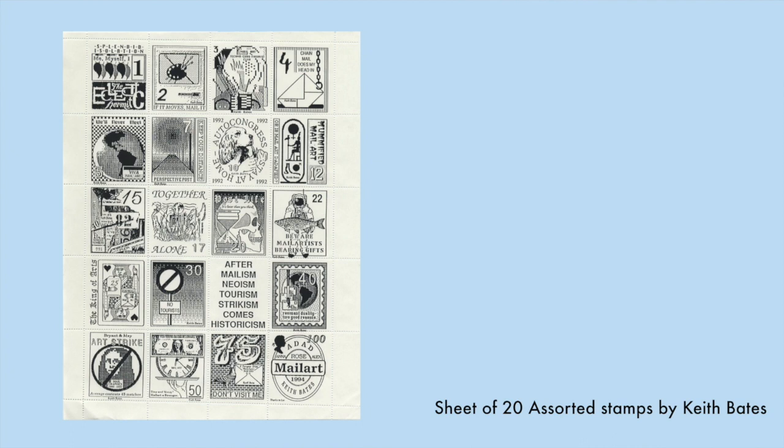This next sheet of assorted stamps is by Keith Bates. I love all of the use of logos in here and sort of this crude internet imagery. And I also love the use of numbers which remind me of the postage amount that is often included on stamps.